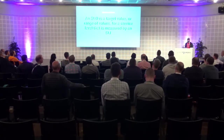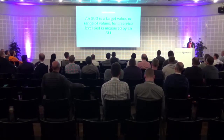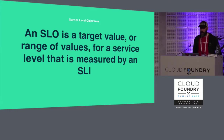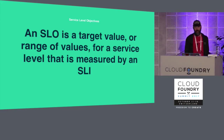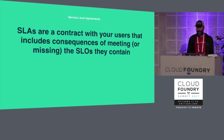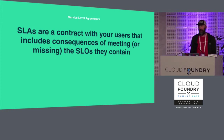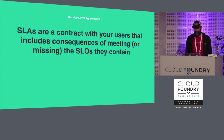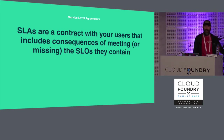We have a service level objective — the target value or range of values for a service measured by an SLI. Duncan thought we could get 40 people; our stretch goal was 50. Then we had a service level agreement — the contract with consequences for meeting or missing the SLAs. So what I have to do now is shave my beard because we didn't get to 50. Someone counted 60, so actually we did hit it — thanks for counting.